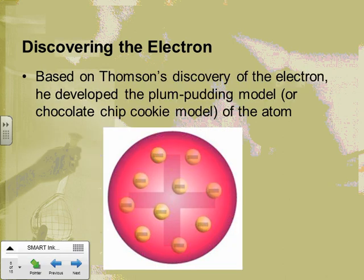After the electron was discovered, Thomson said we need a new model of the atom — the marble doesn't do it anymore, because there's something else inside the atom. It's made up of parts. Thomson, being English and liking plum pudding, came up with the plum pudding model of the atom.